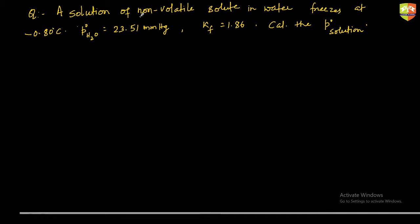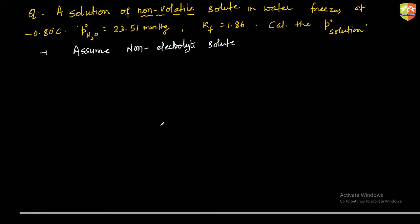A solution of non-volatile solute is given and it is not mentioned whether the solute is electrolyte or non-electrolyte. If it is not mentioned, we have to assume the solute is a non-electrolyte. Now, freezing point is given, so we'll use the formula: ΔTf = i × Kf × m. Since the solute is non-electrolyte, i equals 1.